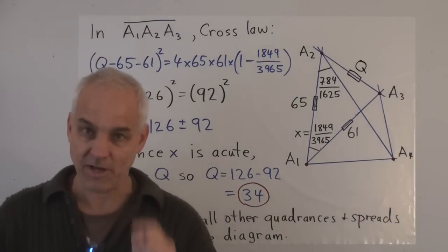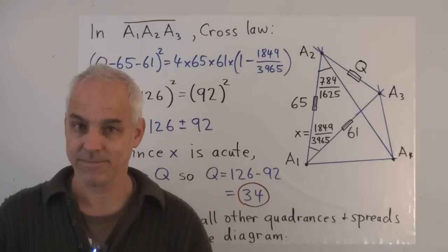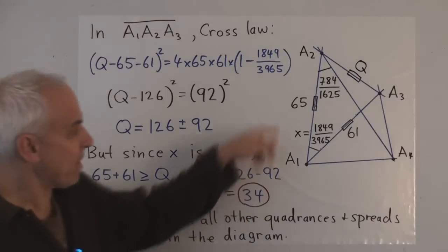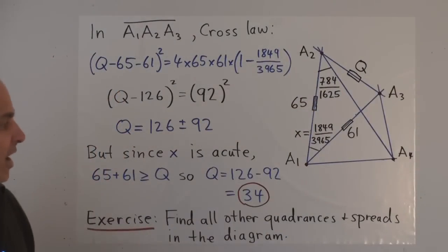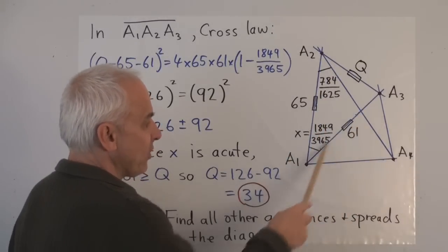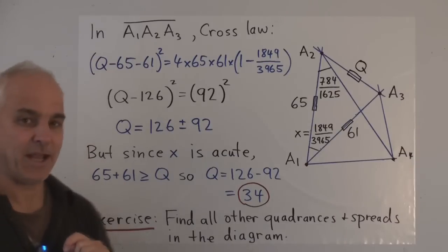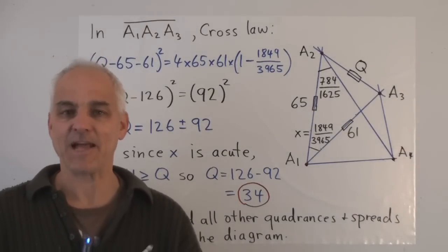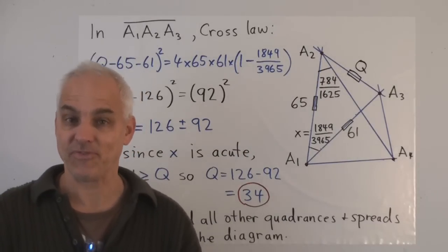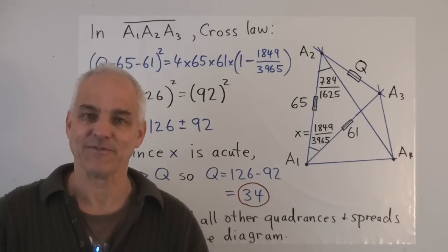For you non-believers out there, try the problem with classical trigonometry. As a good exercise, there are additional quadrances and spreads in the diagram you could calculate. Next time, we're going to look at acute and obtuse triangles and their relations with circumcenters. I hope you'll join me for that. I'm Norman Wahlberger — thanks for listening.